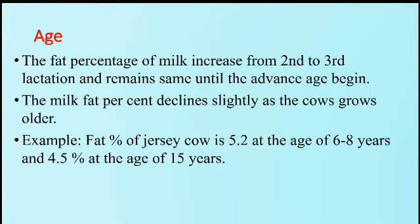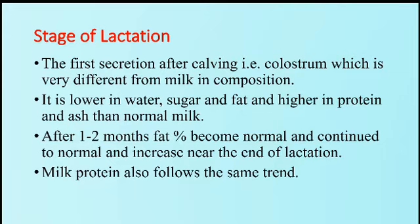The next factor is age. The fat percentage of milk increases from the second to third lactation and remains the same until advanced age begins. The milk fat percentage declines slightly as the cow grows older. For example, the fat percentage of a Jersey cow is 5.2% at age 6 to 8 years, and at 15 years of age, the fat percentage is 4.5%.